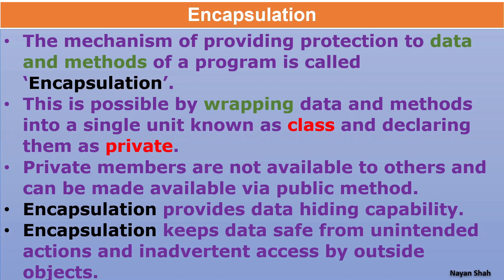Here also the meaning is the same - as much data as we want to protect, we declare those data as private. Once we declare those data as private, those data are protected so that no part of the same program or any other program can make any modification. This is possible by wrapping data and methods. A class is made up of data and methods, that is attributes and functions, into a single unit known as class, and declaring that class as private. This is where object-oriented programming differs from structured programming, where data and methods are not kept in any unit and are publicly available.